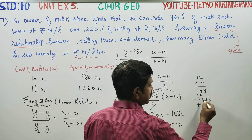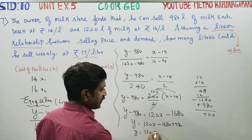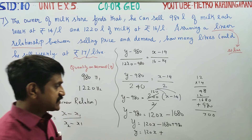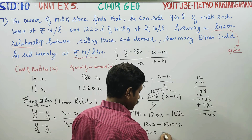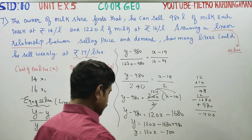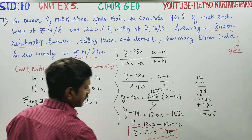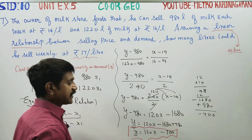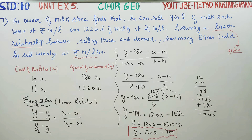Therefore y = 120x - 700. This is the equation of the straight line representing the demand-price relationship, where y is the demand (litres) and x is the price per litre.